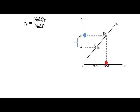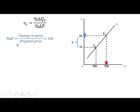Let's first calculate the percentage change in price. The price increases from 16 to 24, a change of 8. The percentage change in price is calculated as the change in price of 8 divided by the original price of 16, times 100. That gives us 50%.